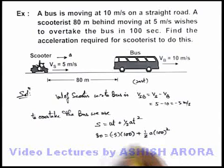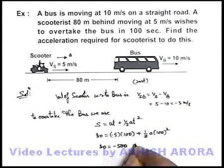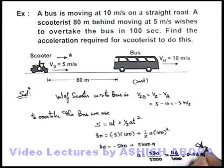On solving this expression, we get 80 equals minus 500 plus 5000a. On solving, we get a equals 580 by 5000, or 116 by 1000, which can be given as 0.116 meters per second squared. This is the answer to this question.